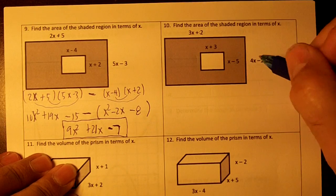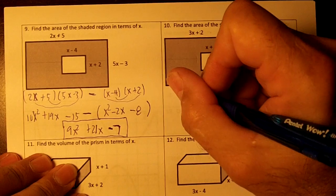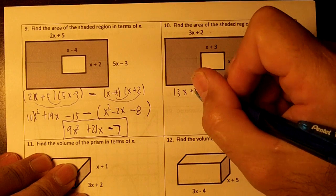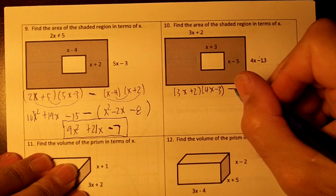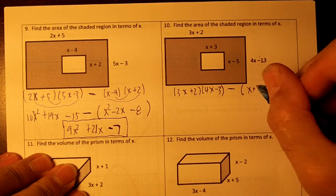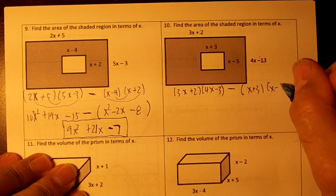Do the same thing over here. 3x plus 2 times 4x minus 3. So 3x plus 2 times 4x minus 3. Minus, parenthesis, x plus 3 times x minus 5.